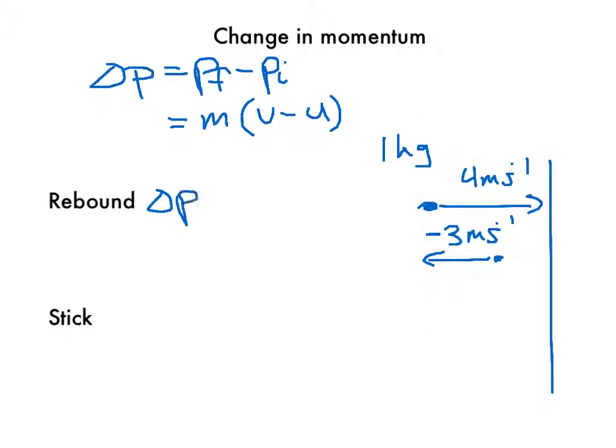So rebound, the delta P, because it's only one object, we'll just use this expression. So one times the final velocity, negative three, minus the initial velocity of four. So the change in momentum there is negative seven kilogram meters per second.